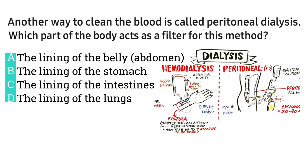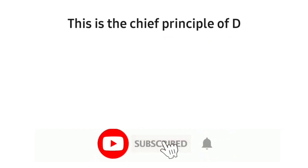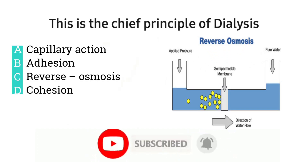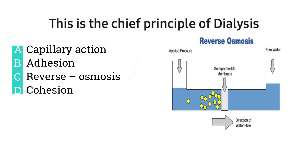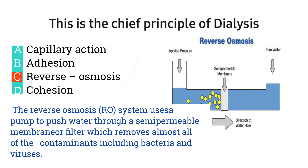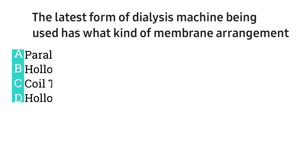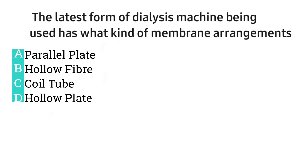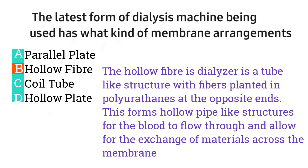Question number five: another way to clean the blood is called peritoneal dialysis; which part of the body acts as a filter for this method — the right option is A. Question number six: the chief principle of dialysis — the right option is C, reverse osmosis. Question number seven: the latest form of dialysis machine uses what kind of membrane arrangement — option B is the right answer.